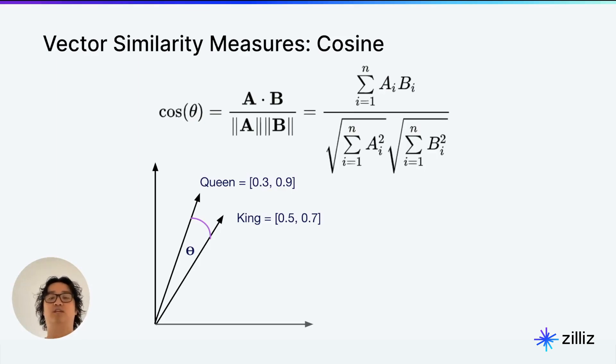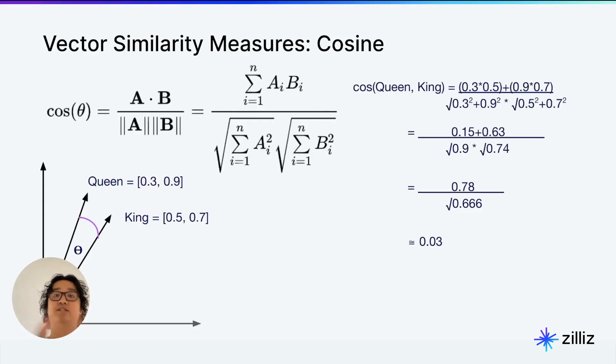You can see that queen and king in this example don't have magnitudes of 1. But that's when it is best used, because it is more efficient at that point. So the cosine similarity here is done by doing a dot product and then dividing by the magnitudes.